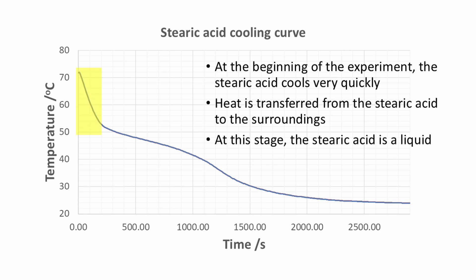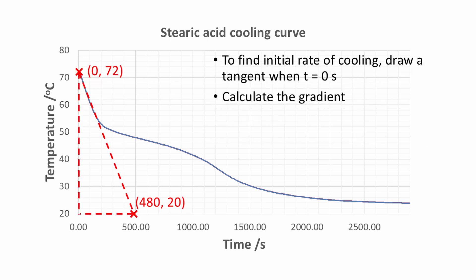At the beginning of the experiment, highlighted in yellow, the stearic acid cools very quickly. Heat is transferred from the stearic acid to the surroundings. At this stage, the stearic acid is a liquid. We can work out the initial rate of cooling by drawing a tangent when time is equal to 0 seconds. The graph has been annotated in red. The hypotenuse of the right angle triangle can be used to find the gradient at t equals 0. A larger triangle will be more accurate when working out gradients. It is a good idea to annotate the points you use to calculate the gradients on the graph with their coordinates.